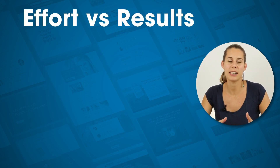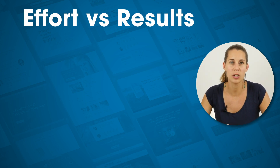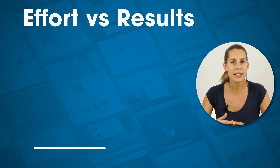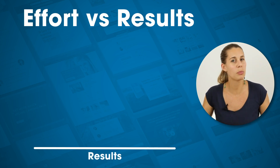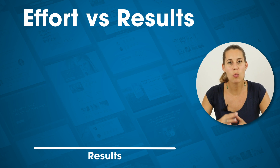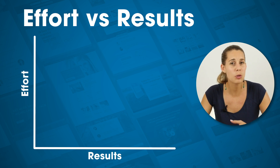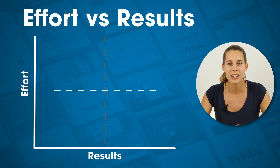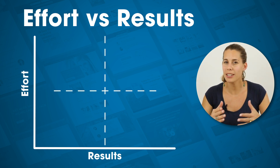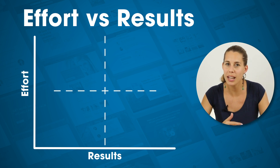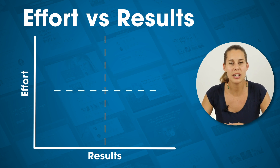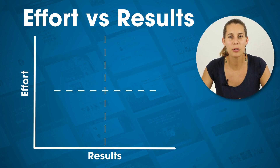The framework I'm talking about is the effort versus results framework. Think about it like this: if you draw axes on a page, you have your x-axis where you add the possible results for the test, and your y-axis where you add the effort and resources it would take to implement that test. This gives you four quadrants, and you can then plot every possible test you can run on your page on these axes to see which one would be the best to start with.